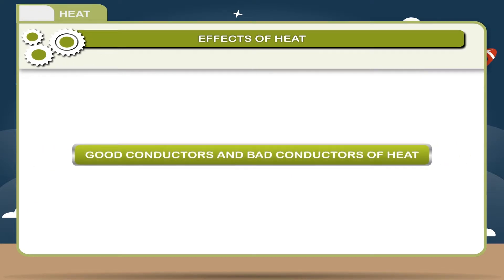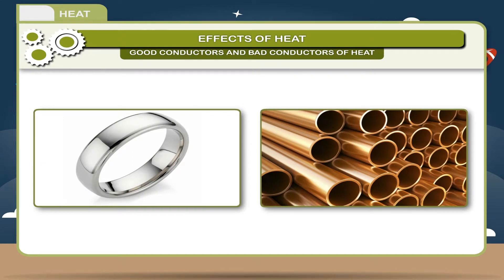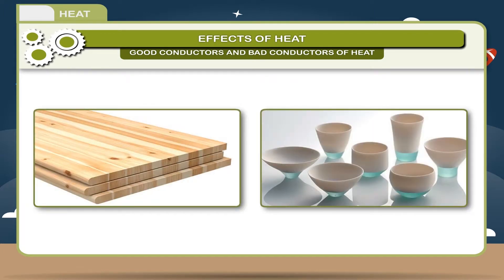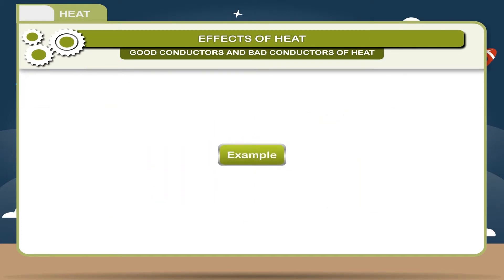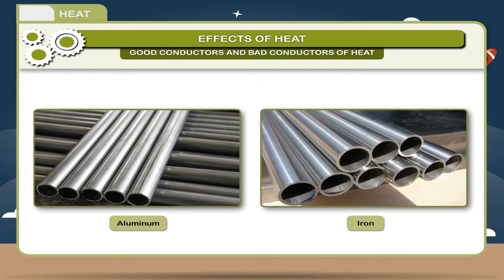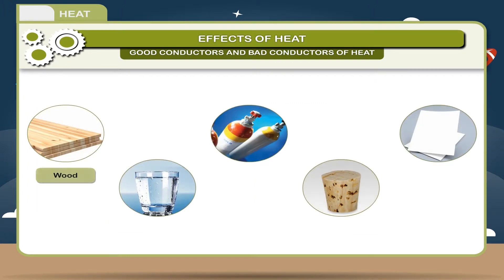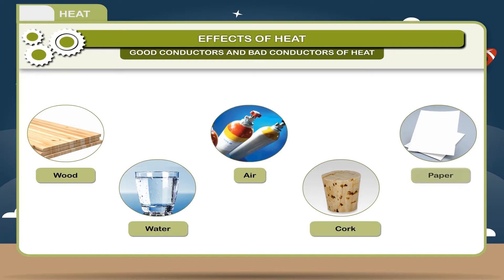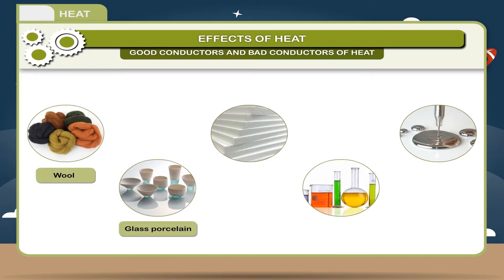Good conductors and bad conductors of heat: materials which conduct heat readily are called good conductors of heat, and those which do not conduct heat readily are called bad conductors or insulators. All metals are good conductors of heat; out of them silver is the best conductor, followed by copper, aluminium, iron, etc.